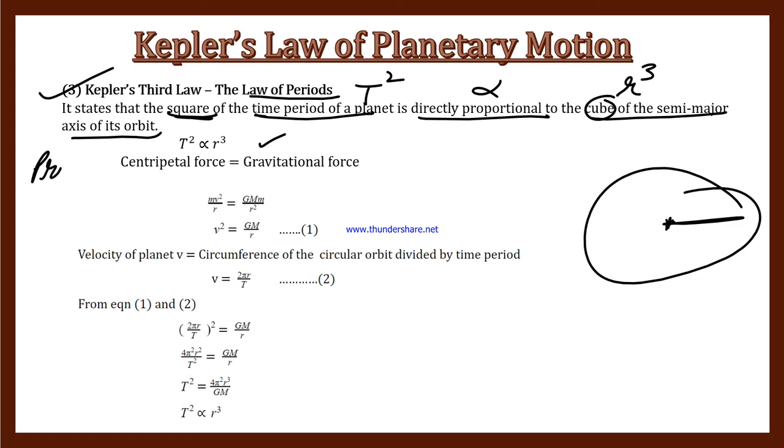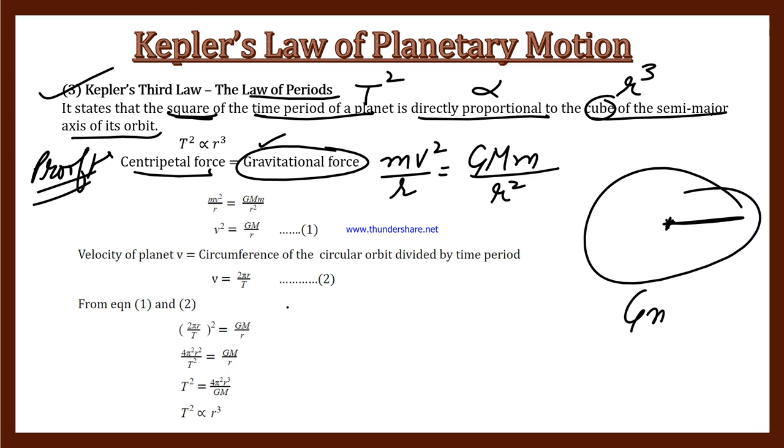Centripetal force is equal to gravitational force. Centripetal force is mv squared divided by R. Gravitational force is GMm divided by R squared. This is the gravitational force, where we have two masses.